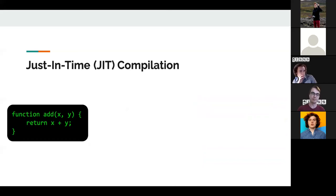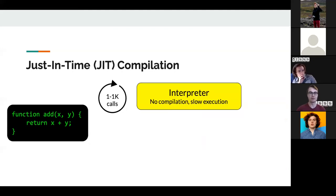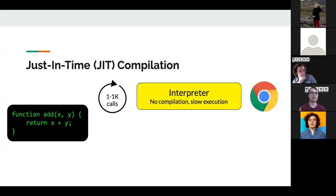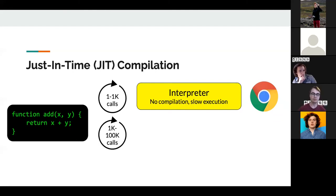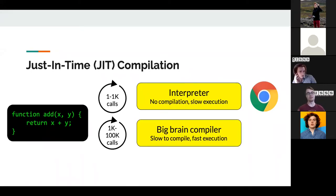The main idea JavaScript engines use is that some functions are used really often, so it makes sense to compile them — they'll be extremely fast. That's called just-in-time compilation, or JIT. Java and some Python interpreters do this. If you run the add function 1 to 1,000 times, there's no reason to compile it — you won't get much benefit. But if code starts to get called more, like 100,000 times, your browser says: this code is getting run a lot, maybe it makes sense to compile it.